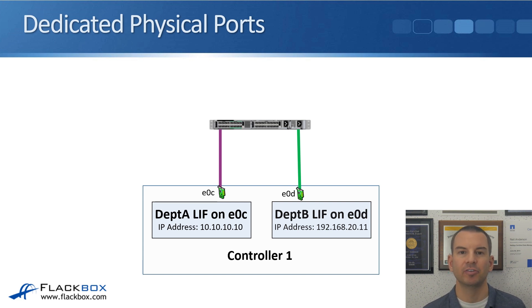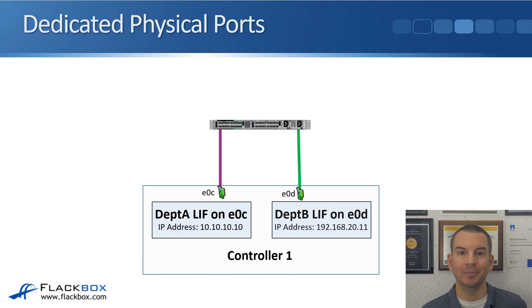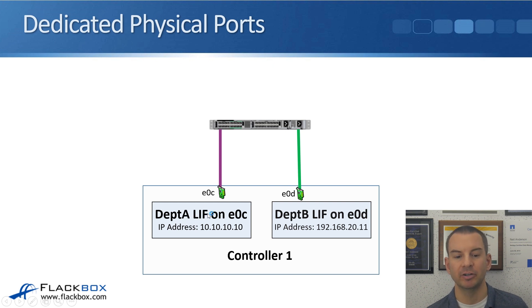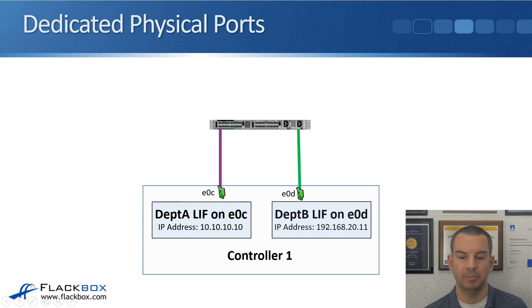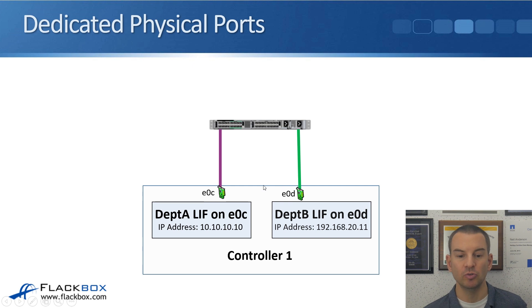Looking at using dedicated physical ports first — this is where we have separate dedicated physical ports for our different connection types. We've got a department A SVM using physical port E0C, with a logical interface at IP address 10.10.10.10, homed on that port. Department B has a logical interface with IP address 192.168.20.11 homed on port E0D. As long as each physical port has enough bandwidth to support the clients, that would be the ideal configuration.